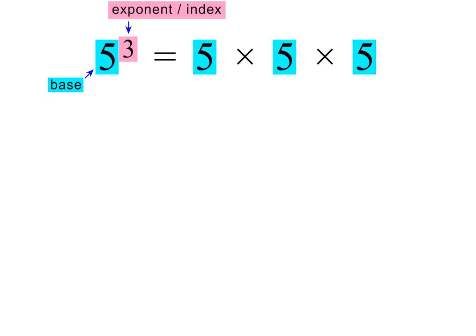The base tells us what to multiply, and the exponent tells us how many times to multiply. And the whole lot together is called the power, which is why we can also read this as 5 to the power of 3.